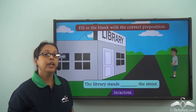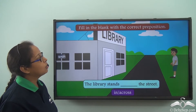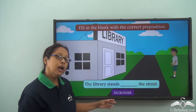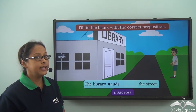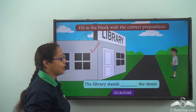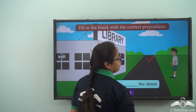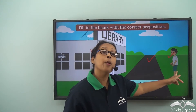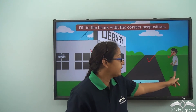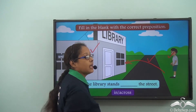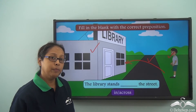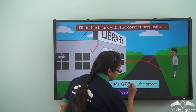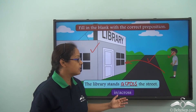Now let's check if we have understood when to use 'across'. Fill in the blank with the correct preposition: 'The library stands ___ the street.' The options are 'in' and 'across'. This boy is standing on one side of the road and can see the library is on the other side of the road. So when talking about something on the other side, we use 'across'. The library stands across the street.